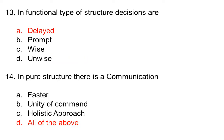In functional type of structure, decisions are: option A delayed, option B prompt, option C wise, option D unwise. The correct answer is option A, delayed.